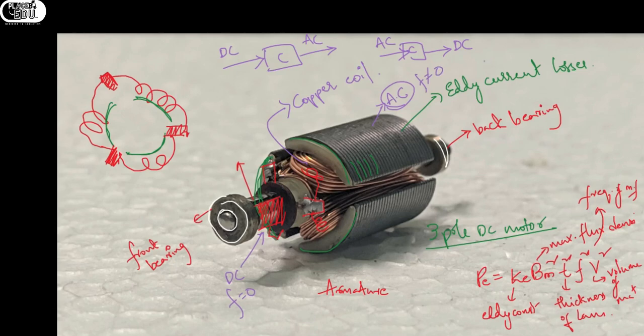Understand, this is why we get eddy current losses, because AC is responsible for the magnetic field. For example, we have the formula N equals to 120 F by P. We have poles, we have speed, so the frequency will not be equal to 0 because we have poles and speed not equal to 0.